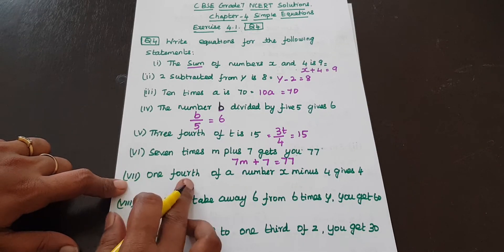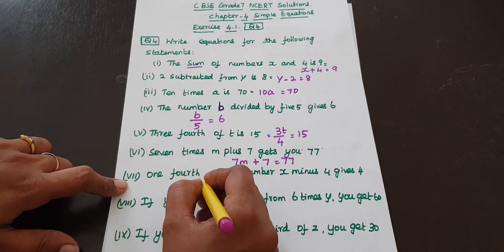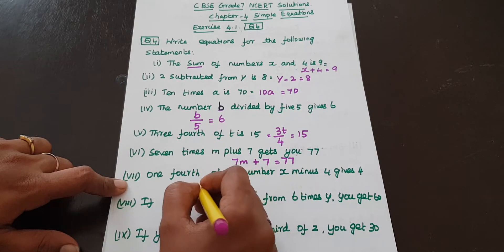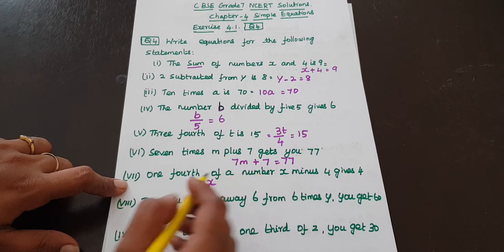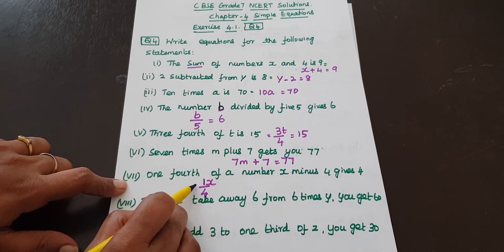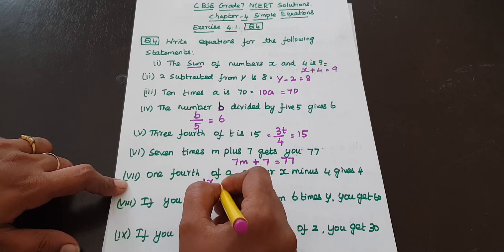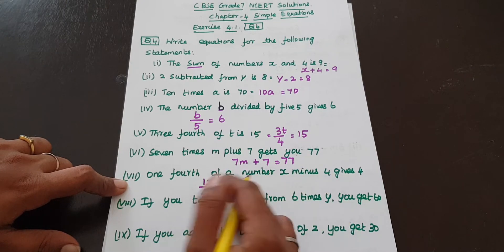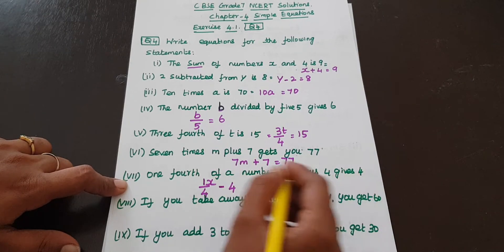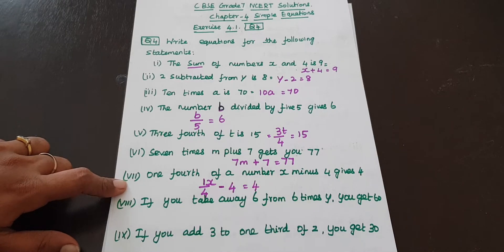Next: 1 fourth of a number x minus 4 gives 4. So 1 fourth of x — written as x by 4 — minus 4 is equal to 4.